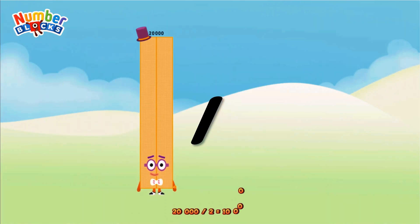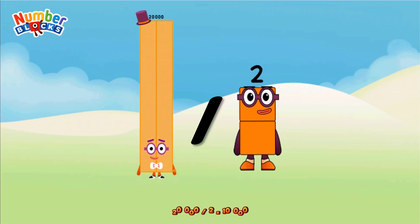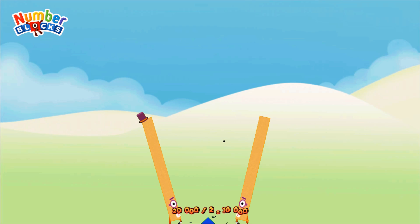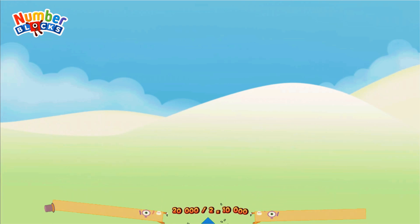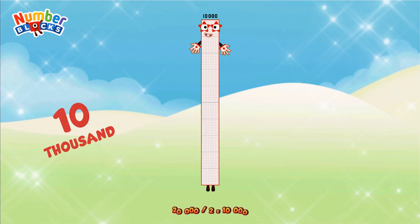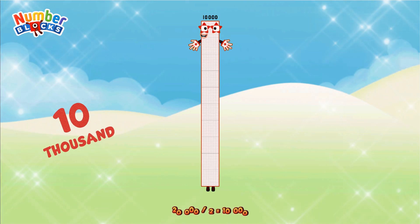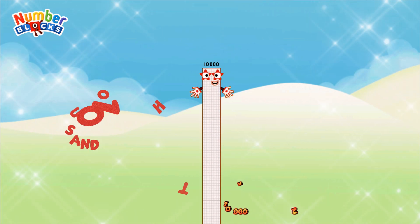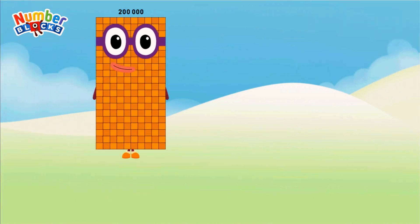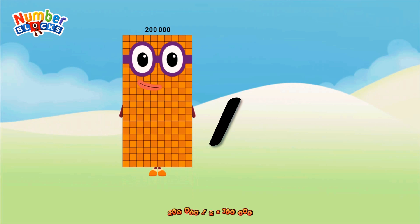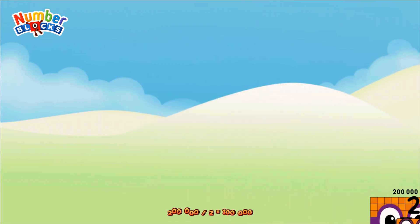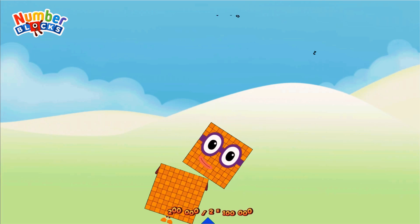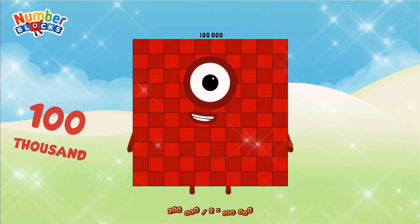Twenty thousand divided by two equals ten thousand. Two hundred thousand divided by two equals one hundred thousand.